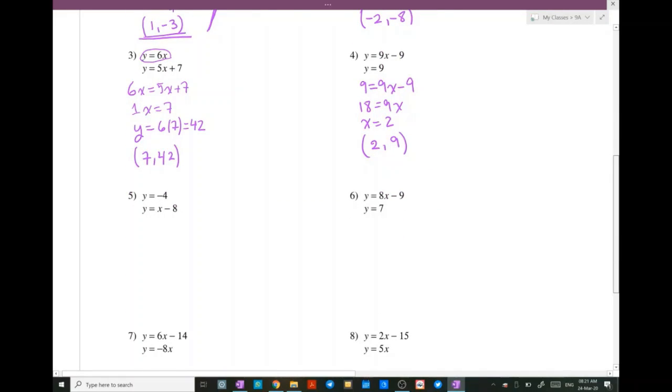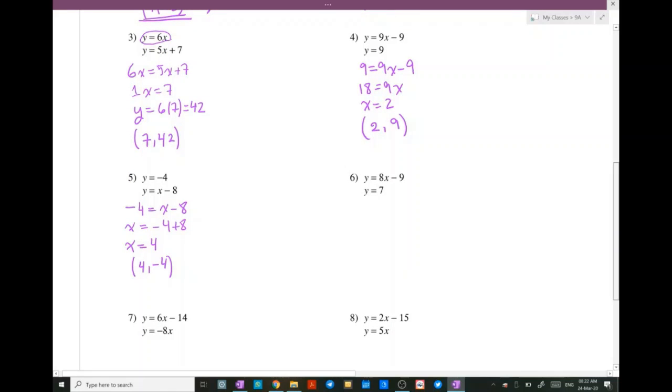Number 5, 4 minus 4 is equal to x minus 8, so x is equal to minus 4 plus 8, so x is equal to 4. So the solution is going to be 4 and minus 4.